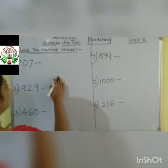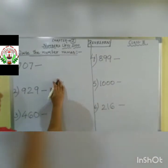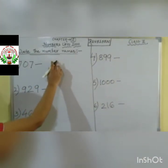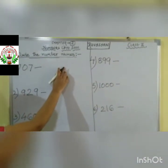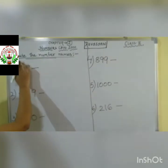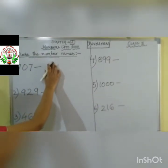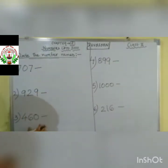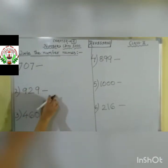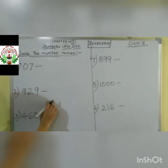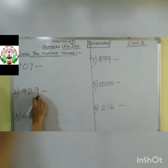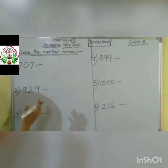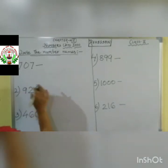So children, here we will see about number names. Write the number names. That means various numbers are given. You have to write down the names of the numbers — or as you can say, the spellings of the numbers.